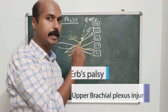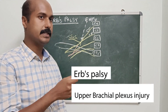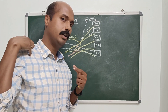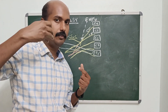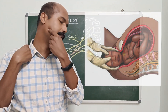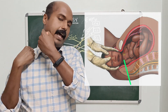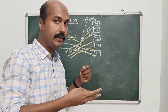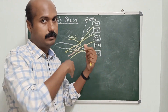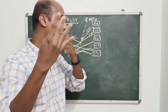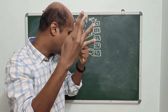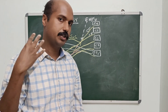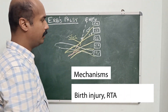ERB's palsy is technically an upper brachial plexus injury. The common mechanism is an obstetric injury — a birth injury in which, in a shoulder dystocia case, the shoulder is obstructed within the birth canal and traction on the neck or head causes an increase in the angle between the neck and the shoulder. Another mechanism is a road traffic accident in which the victim is thrown from a motorbike and lands on the ground, suddenly and vigorously increasing the angle between the neck and the shoulder.